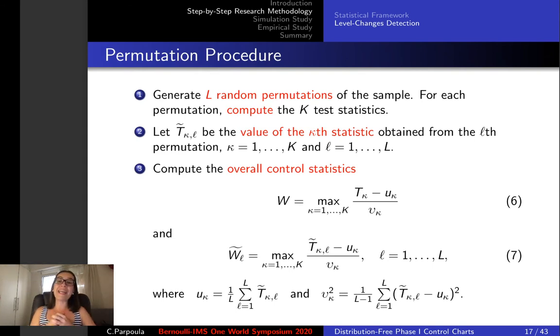We fix the number of random permutations, denoted by l, and we compute the test statistics for each permutation. Let us denote with tau kappa l tilde the value of the kappa statistic obtained from the l permutation.